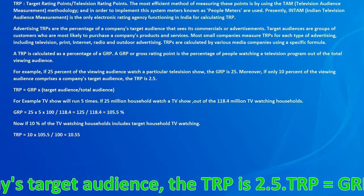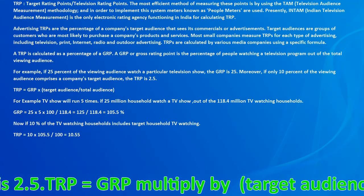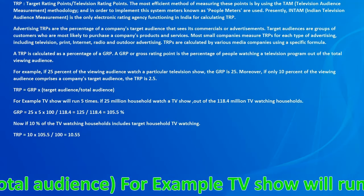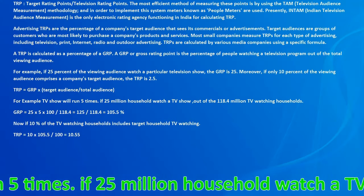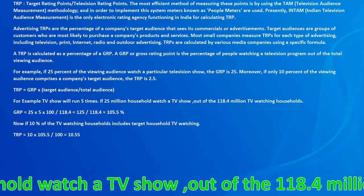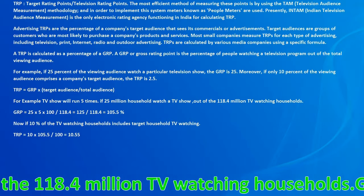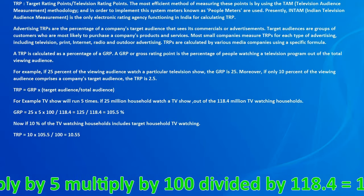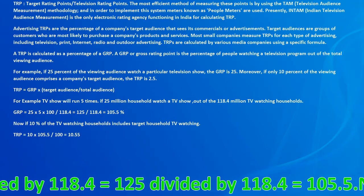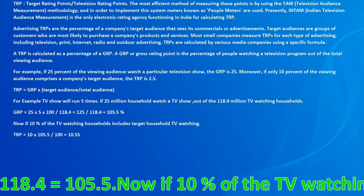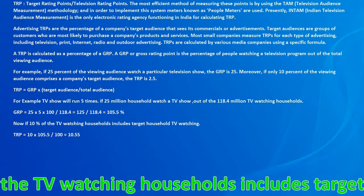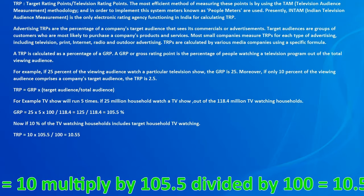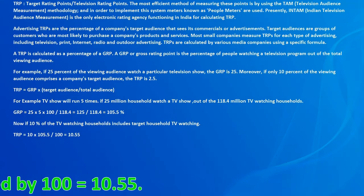For example, if 25 million households watch a TV show out of 118.4 million TV-watching households, and the show runs 5 times, GRP equals 25 multiplied by 5 multiplied by 100, giving approximately 10.5. Now if 10% of TV-watching households are the target households, TRP equals 10 multiplied by 10.55 divided by 100, which equals 10.55.